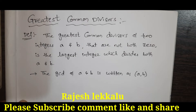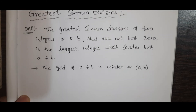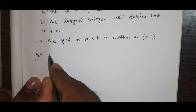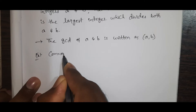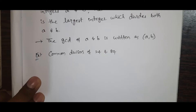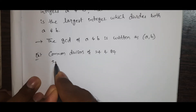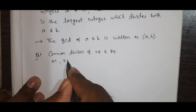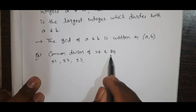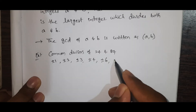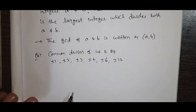If you find the common divisors, then you can divide the number. Let's look at the common divisors of 24 and 84. For 24 and 84, the divisors include plus or minus 1, plus or minus 2, plus or minus 3, plus or minus 4, plus or minus 6, and plus or minus 12.